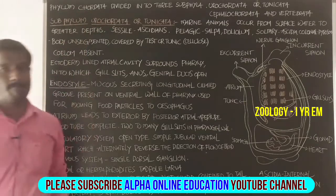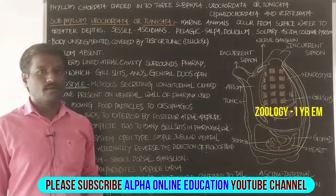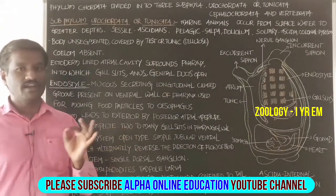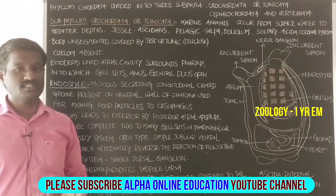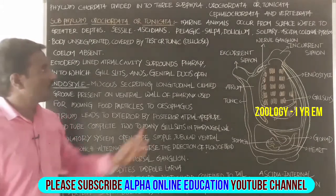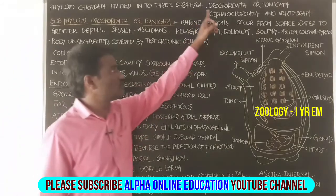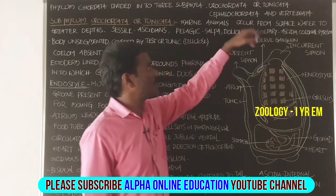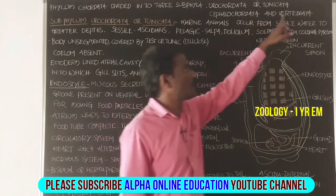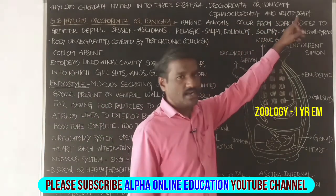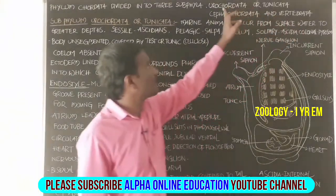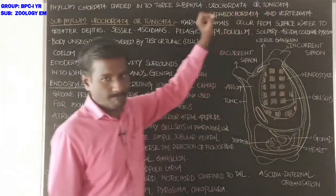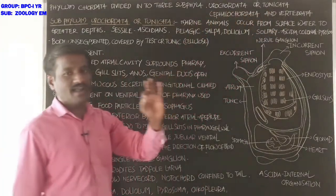Phylum Chordata is divided into three subphyla. The first one is Urochordata, the second one is Cephalochordata, and the third one is Vertebrata.